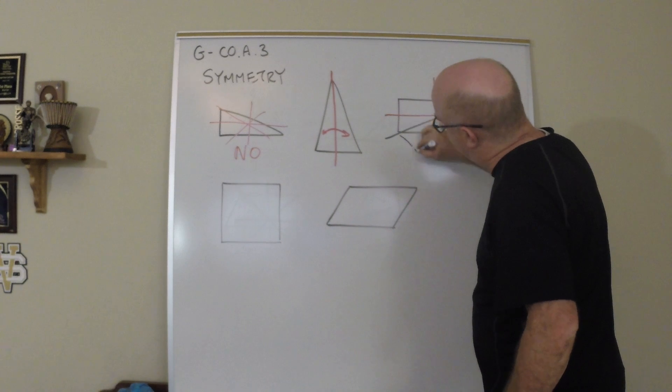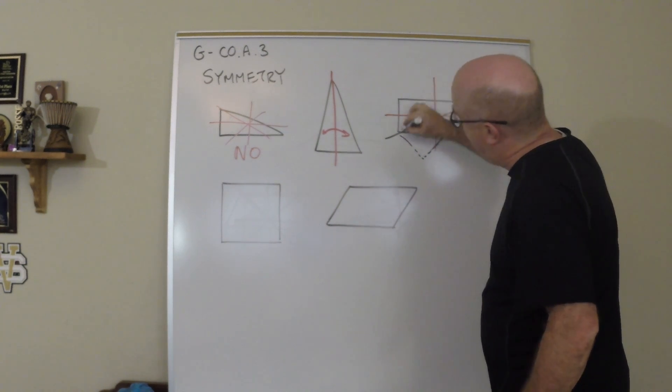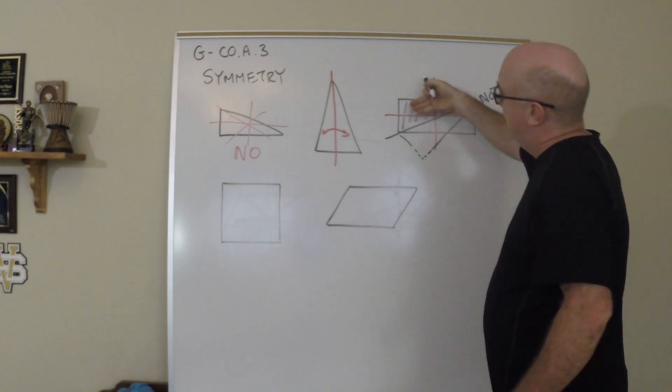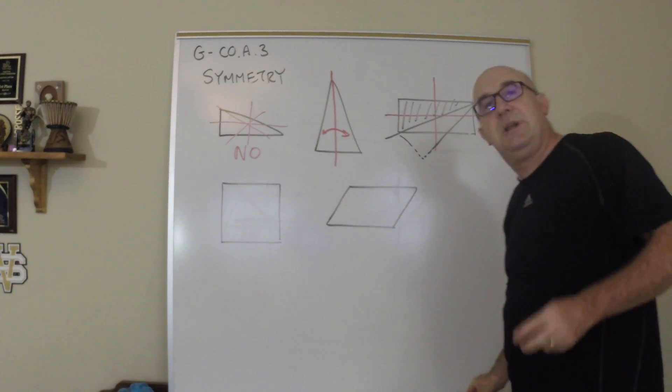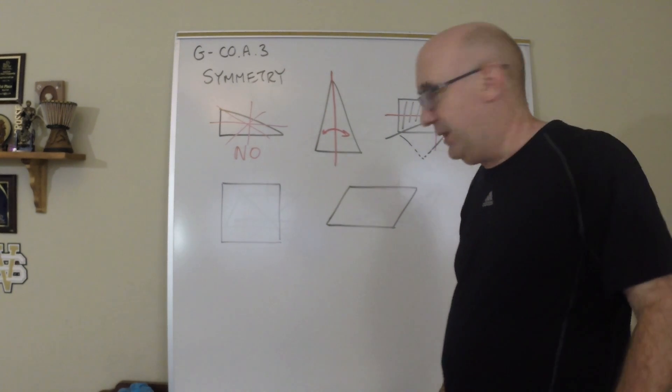What would actually happen is what you just saw is that this piece would fold to this, not onto the other. And so there is only two lines of symmetry there.